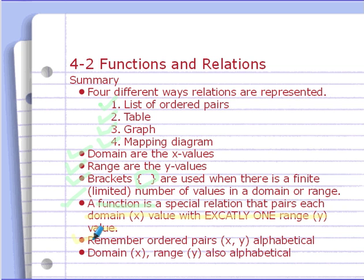And just things to remember, ordered pairs are x, y. Alphabetical, x comes before y. And domain is also x values, y values, and that's also alphabetical. So just some ways to help you remember. Bring any questions to class, and thanks.